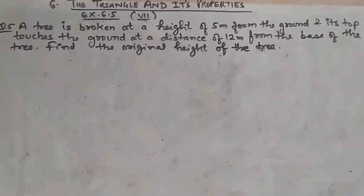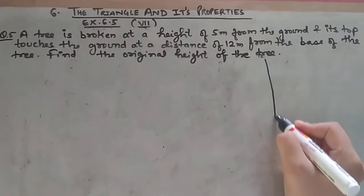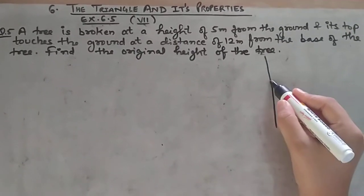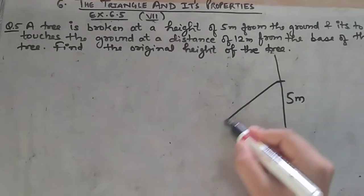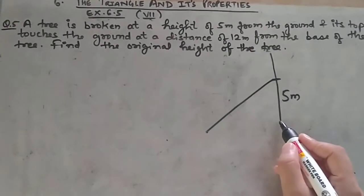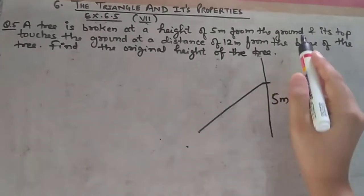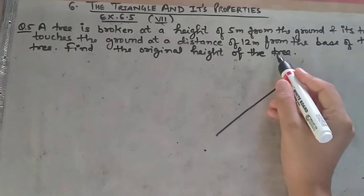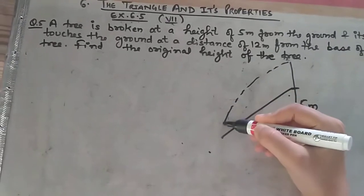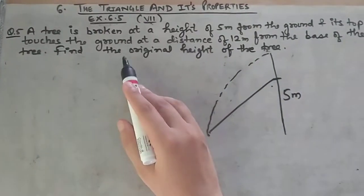There is a tree which broke at a height of 5 meters. After breaking, it fell down. When it fell down, its top part touched the ground at a distance of 12 meters from the base of the tree.